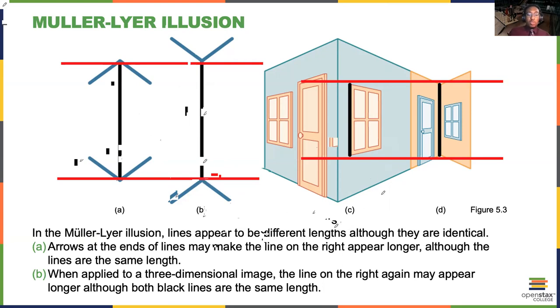And then you can also see it applied to a three-dimensional image. So here because of our knowledge about how rooms work and our depth perception we assume that D is longer than C when that's not actually the case.